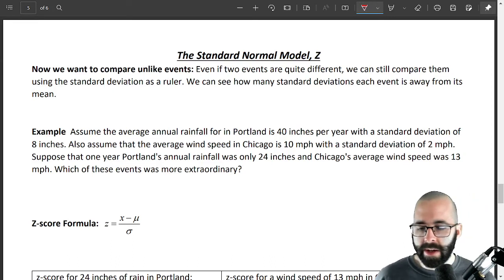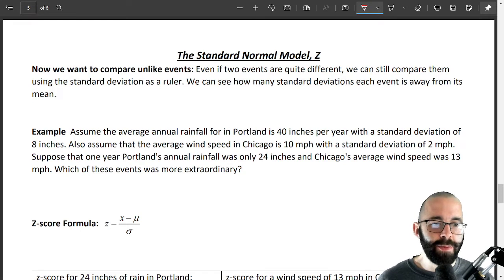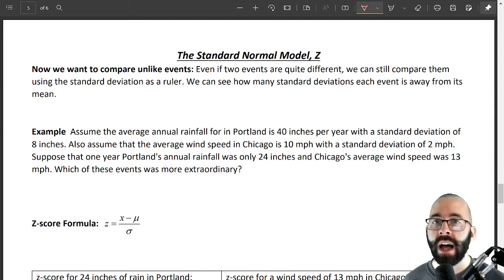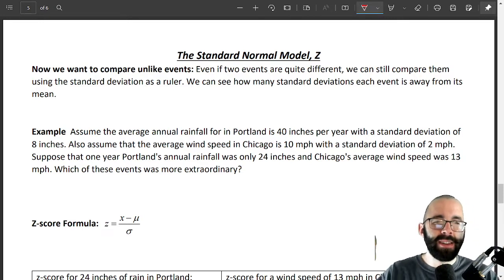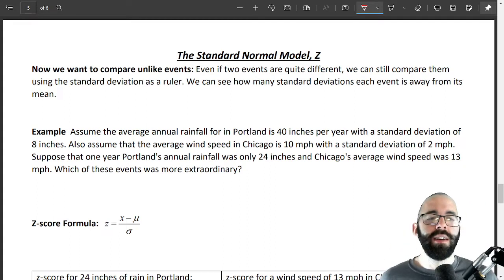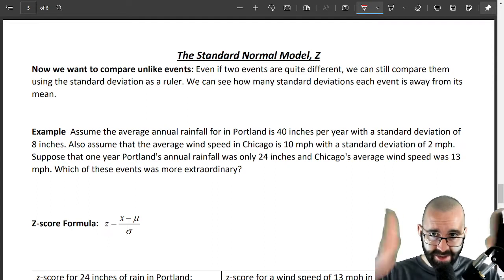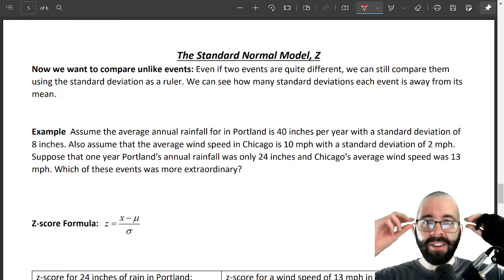So I made a big deal earlier, or maybe not a big enough deal, but there is a big deal to be made about every normal model looks the same. It just has different numbers in different places, but they all have the same shape. They might be squished,